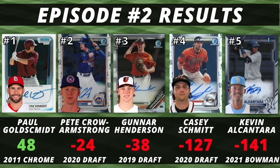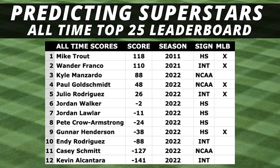Here are the final results for episode 2. Paul Goldschmidt was the only player to score in the positive with a score of 48. Negative scores are very common and only show how far away a prospect is from the superstars' numbers. Pete Crow Armstrong scored 16 points better than expected, taking second place, while Gunnar Henderson finished with the bronze at negative 38. Casey Schmidt and Kevin Alconora didn't make the podium after both taking a significant hit in age level. Here is the updated all-time leaderboard: Paul Goldschmidt cracked the top 5 at number 4, while PCA and Gunnar Henderson snuck into the top 10 at 8 and 9. You can download the full all-time scores database and the formula on a PDF file at letstalkwax.com.